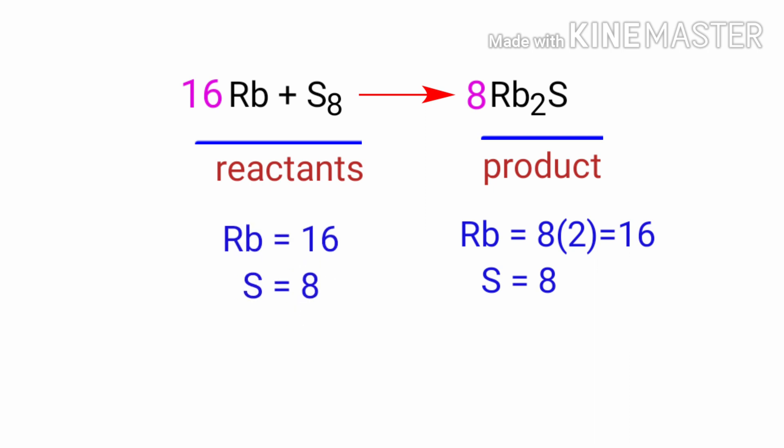The equation is now balanced. There are 16 Rubidium atoms and 8 Sulphur atoms on both sides.